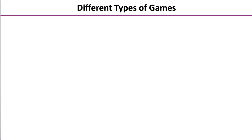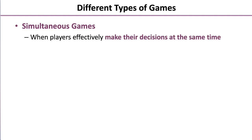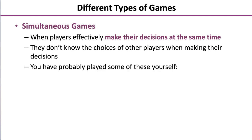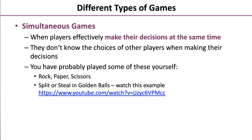There are different types of games. Simultaneous games involve players effectively making their decisions at the same time. They don't know the choices of other players when making their decisions, so there's some uncertainty involved. You've probably played some of these yourself — rock, paper, scissors.